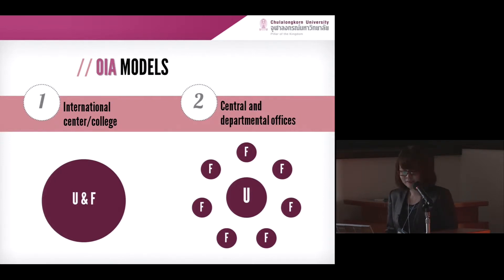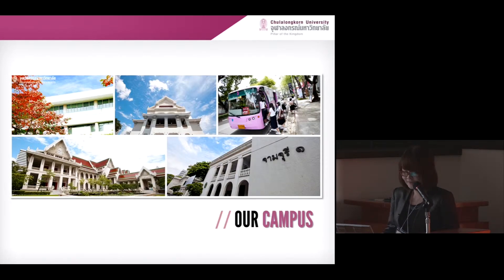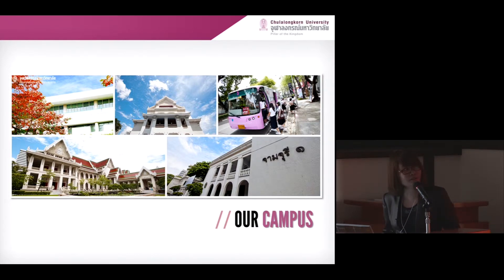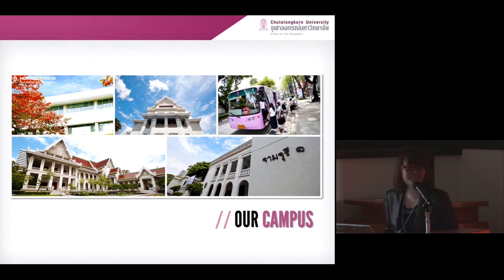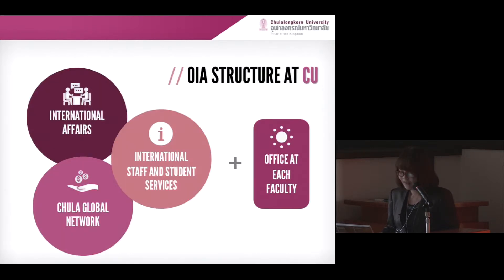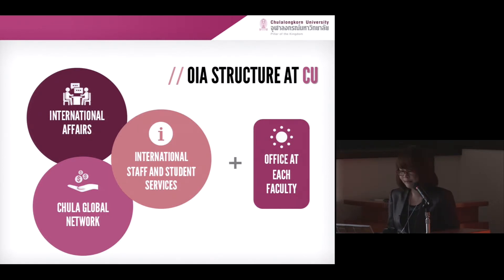Let me introduce you to the structure of OIA at Chulalongkorn. This is the picture of our campus, and on the bottom right is the building that our office is in. We are actually celebrating the 100th year anniversary of our university in 2017. The structure of the OIA at Chulalongkorn uses the second model, with two levels of administration: the university's central office and the office at each faculty.